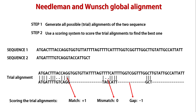The alignment with the highest possible score is defined as the optimal alignment. At the end, we globally align the two sequences. Remember that the Needleman-Wunsch algorithm aligns two sequences end to end, and this is why it is called a global alignment.